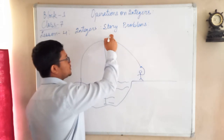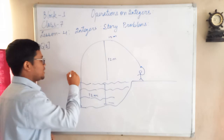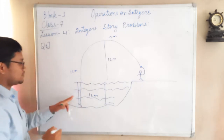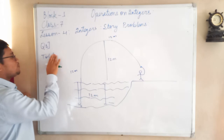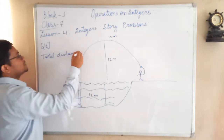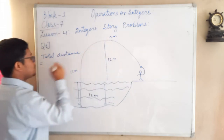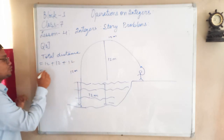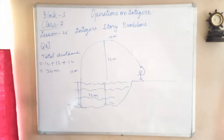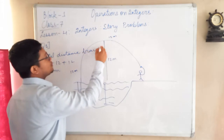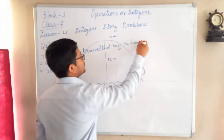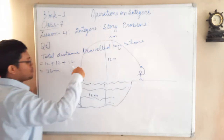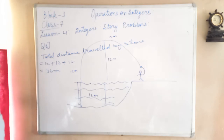The stone first travelled 12 meters upward, then came back 12 meters down to ground level, and then went 12 meters below into the lake. So the total distance is 12 plus 12 plus 12, which equals 36 meters. That is the total distance travelled by the stone.